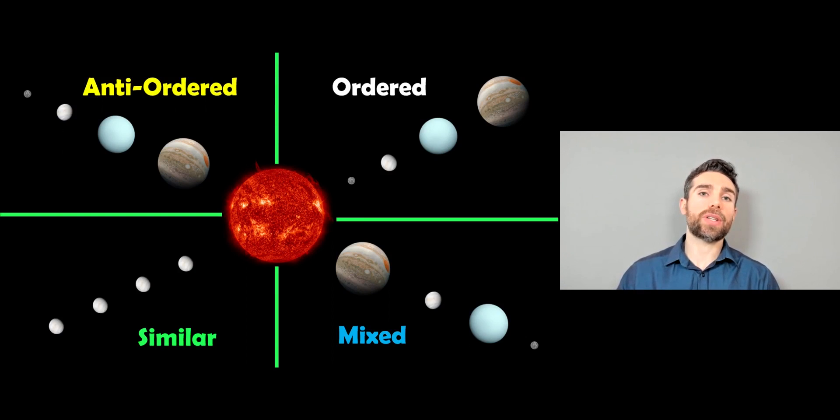Welcome to this video where we're going to look at the four classes of planetary systems that have been determined by astronomers quite recently. This is for systems that have multiple planets that can be arranged in various different ways. The four classes are ordered, anti-ordered, similar, and mixed.